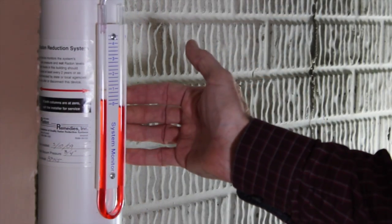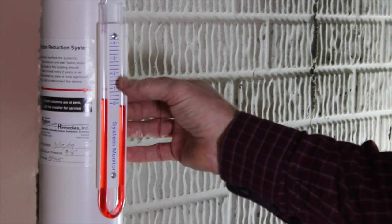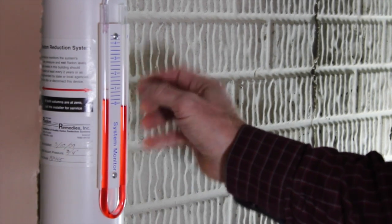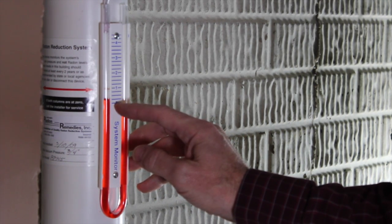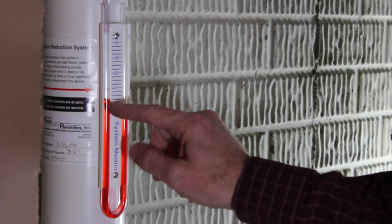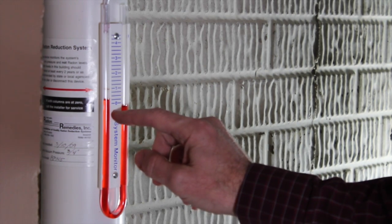The manometer on the system tells you at what level the fan is pulling. It has these numbers here which have no correlation to the radon level itself, but it tells you how much the fan is pulling.